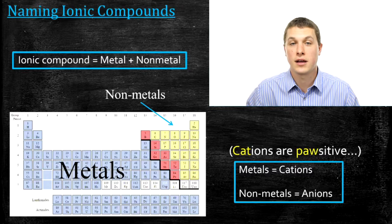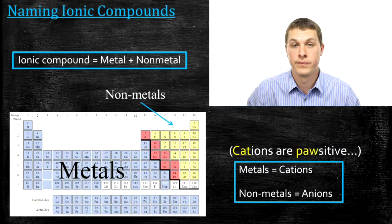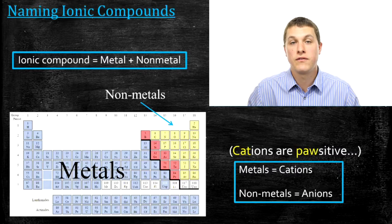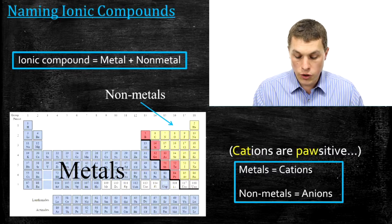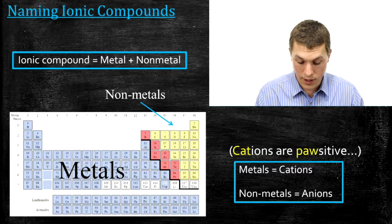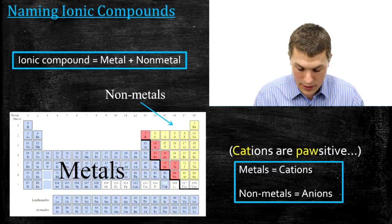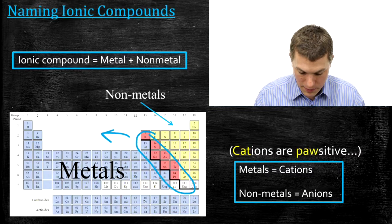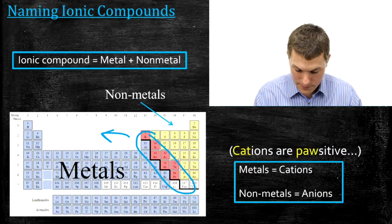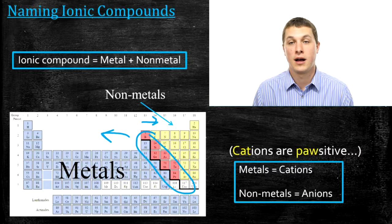The first question you might have is: what's an ionic compound? Basically, an ionic compound is just a mixture of a metal and a non-metal. If you want to know if something's a metal or a non-metal, you can find that from its position on the periodic table. Everything in blue on the periodic table turns out to be a metal. The dividing line between metals and non-metals is the stair step — everything to the left is metals, everything to the right is non-metals. If you pair a metal and a non-metal, it makes an ionic compound.